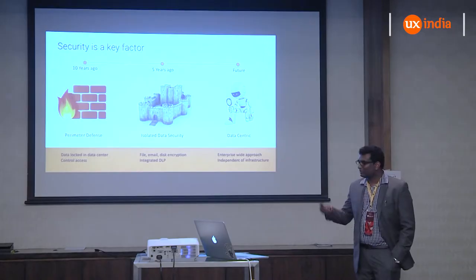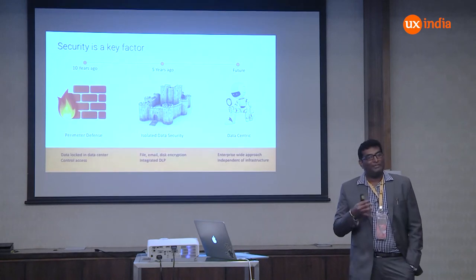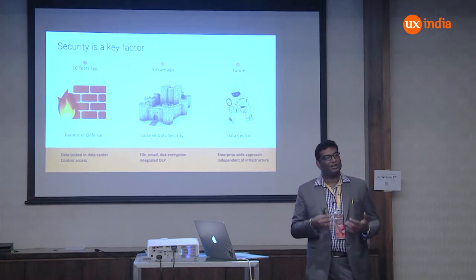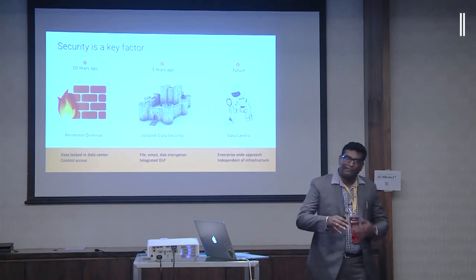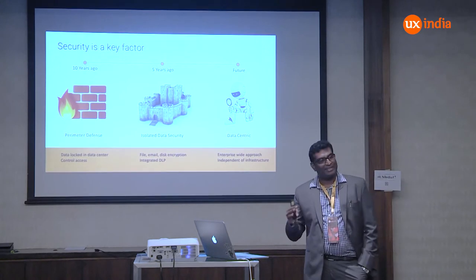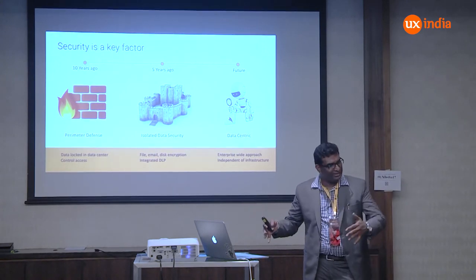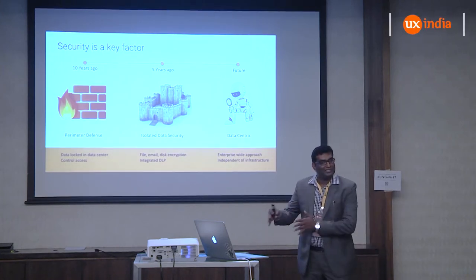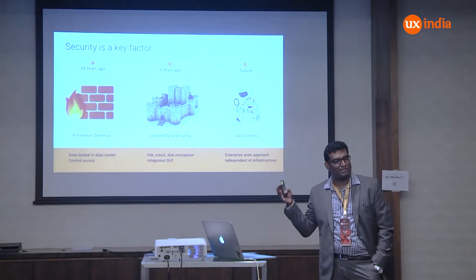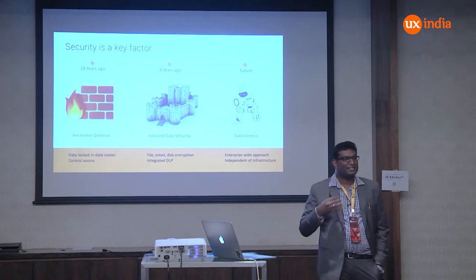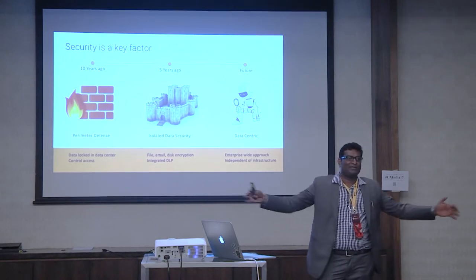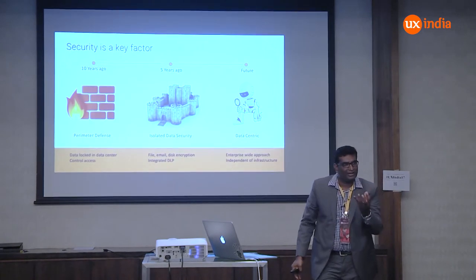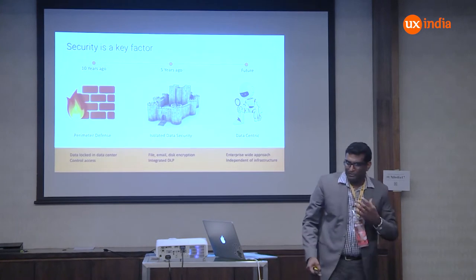Ten years back, security was more about a perimeter-defined approach — your data was locked into data centers with controlled access. Five years back, it shifted to isolated data security at a broader organizational or department level, with file, email, and disk encryption. Going forward, with this level of disruption, it's all going to be data-centric. If you have credit card numbers, you should be able to protect at that level — that's called data-centric security.